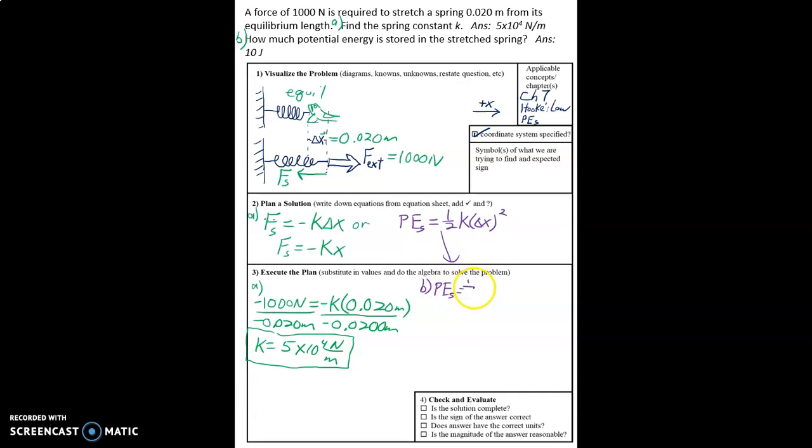Spring potential energy, 1 half times 5 times 10 to the fourth newtons per meter times 0.020 meters squared. So we're taking this value and putting it in right there. And so then, plug these values into our calculator, and we get 10 joules.